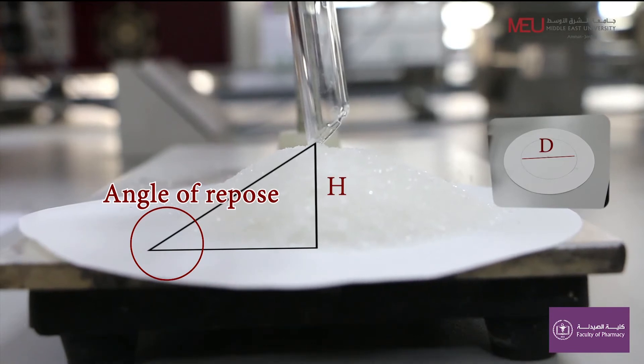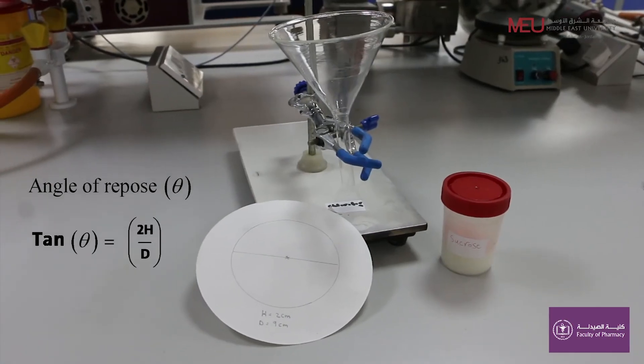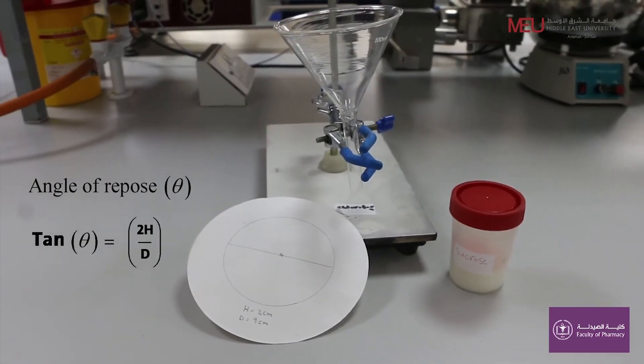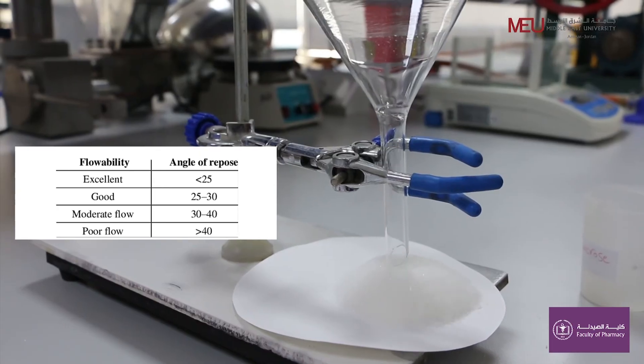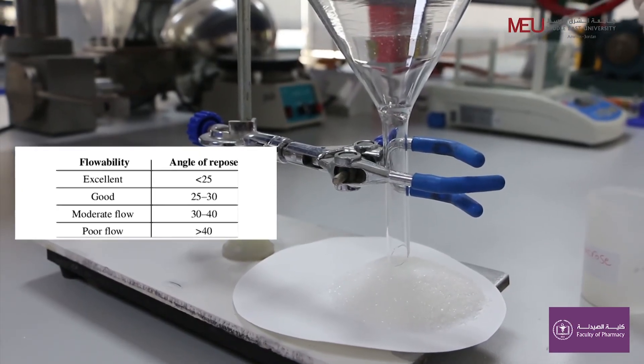Now you have the height and the diameter so you can calculate the angle of repose. Based on the angle of repose, you can determine if this powder has a good or a bad flow. Thank you.